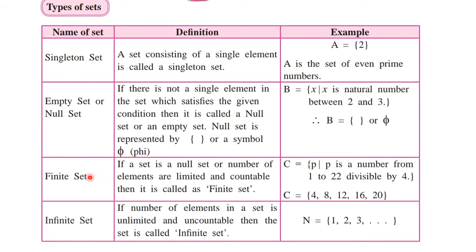The next set is finite set. Finite set means the elements are countable. If a set is a null set, or the number of elements is limited and countable — meaning we can count them — such sets are called finite sets.